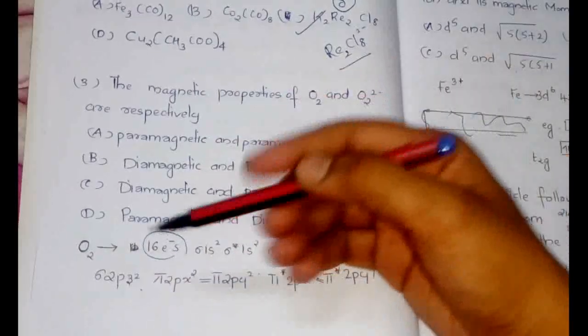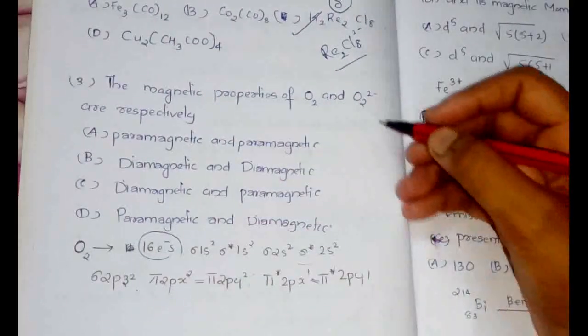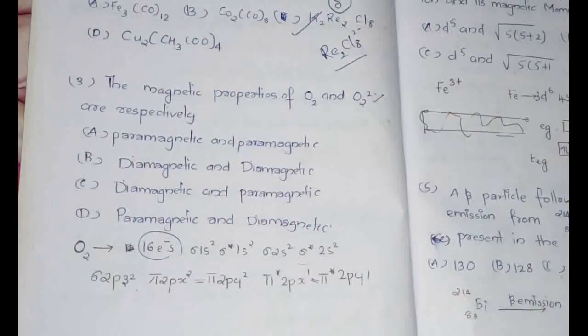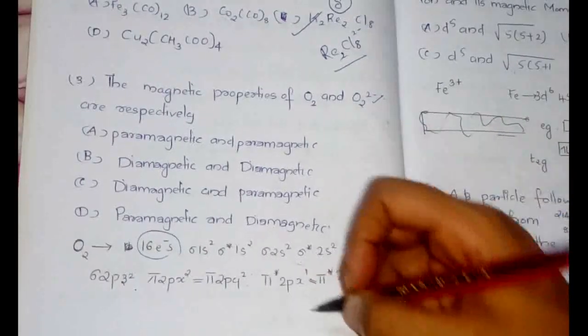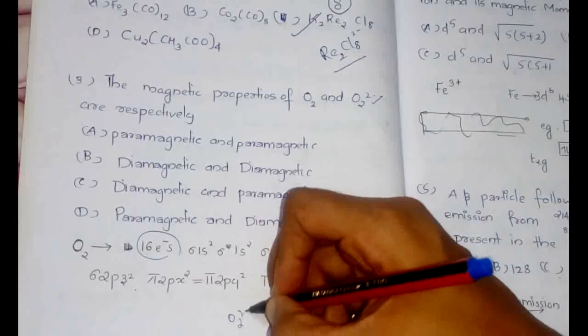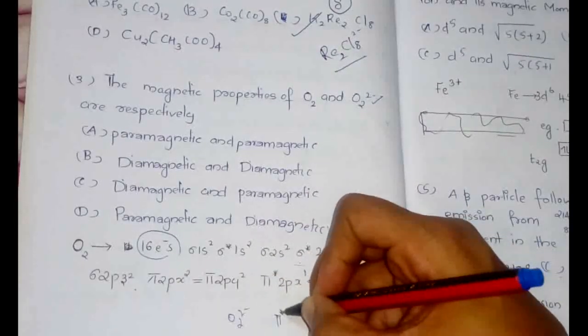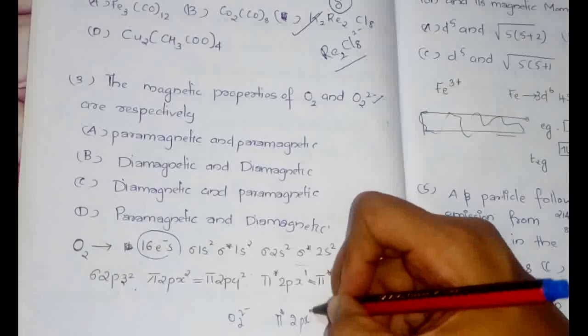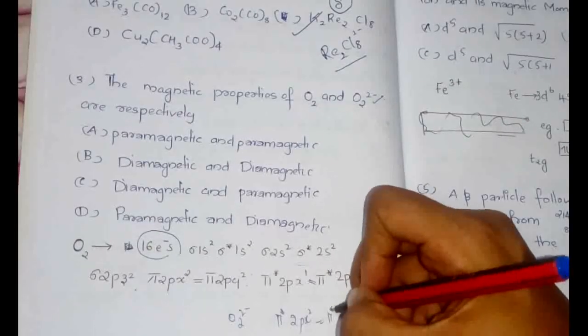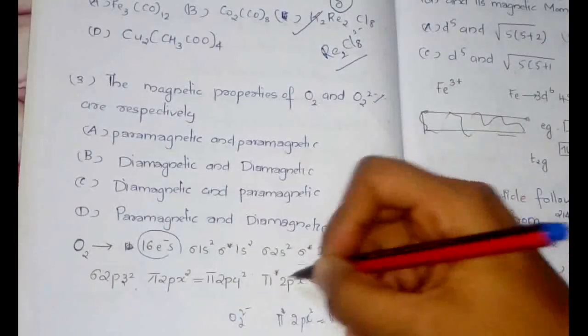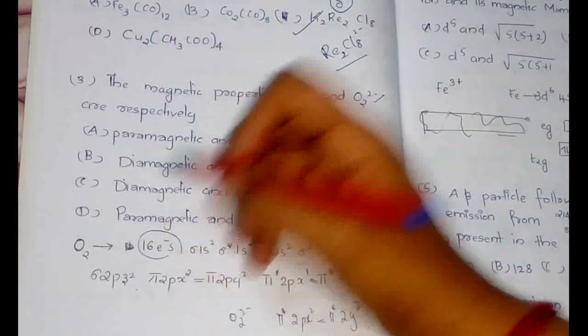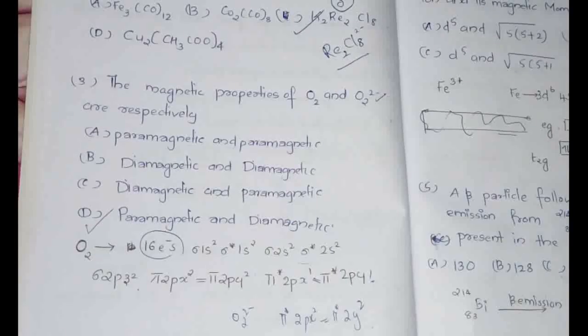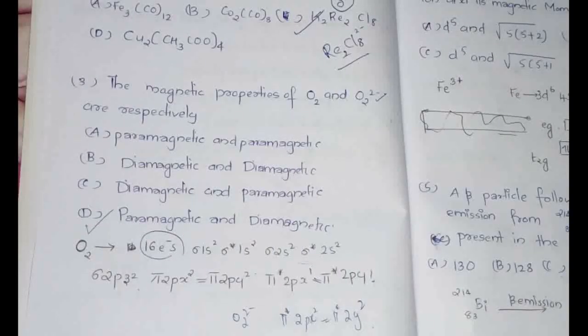So obviously if O2 is already paramagnetic, in O2 2- we just have to fill two more electrons and both those electrons will be filled in these orbitals. So this will become, in case of O2 2-, the only change would be here it would be 2px2 equal to pi star 2py2. So the unpaired electrons become paired in O2 2-. So the answer would be paramagnetic and diamagnetic respectively. O2 would be paramagnetic and O2 2- would be diamagnetic.